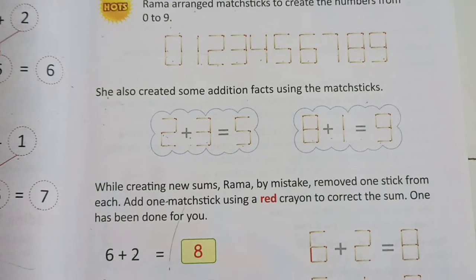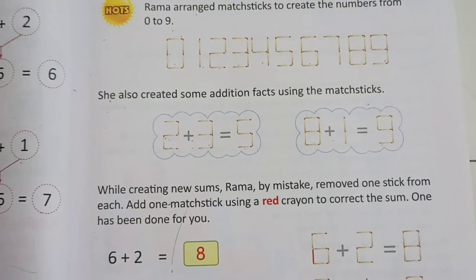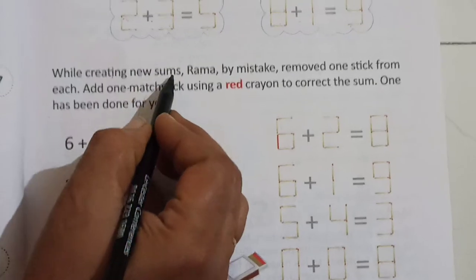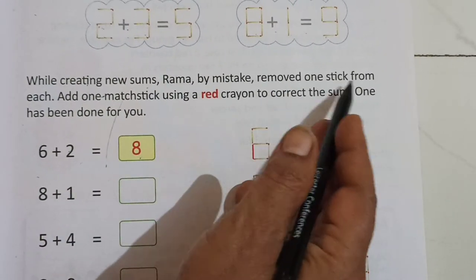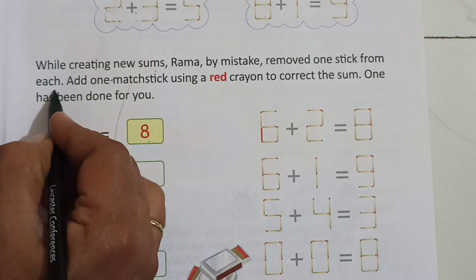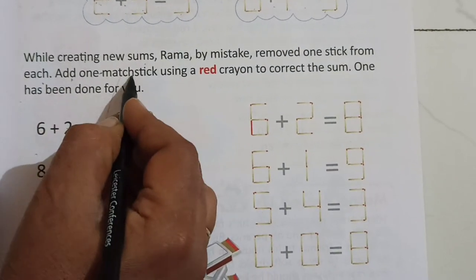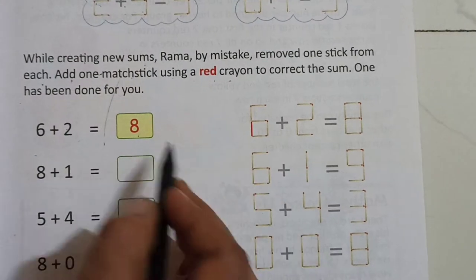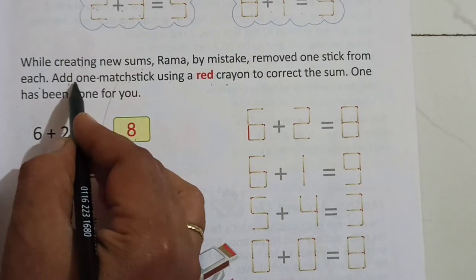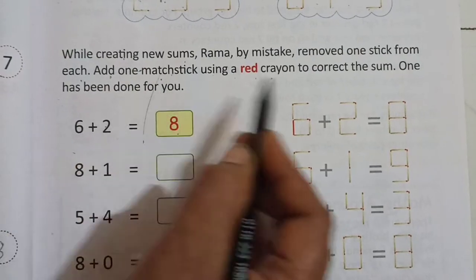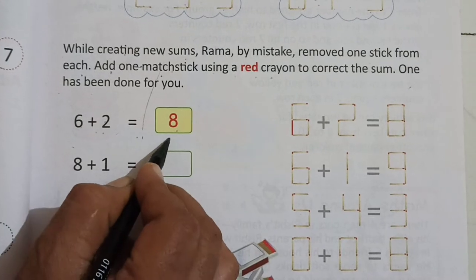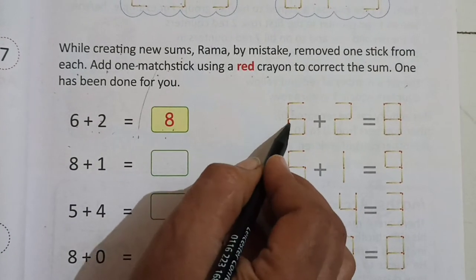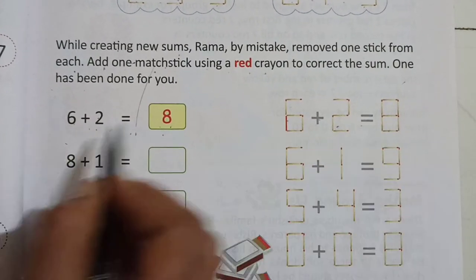Now we have to do here while creating new sums. Rama, by mistake, removed one stick from each. Add one matchstick using a red crayon. Means we have to add one matchstick to correct the sum. Here, look here. 6 plus 2 is equal to 8. This 6 plus 2 is equal to 8.